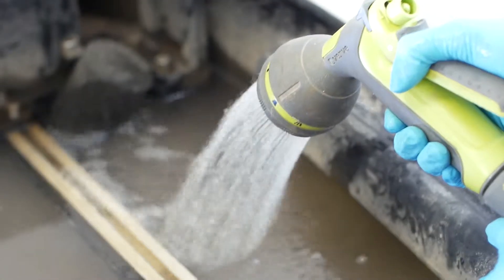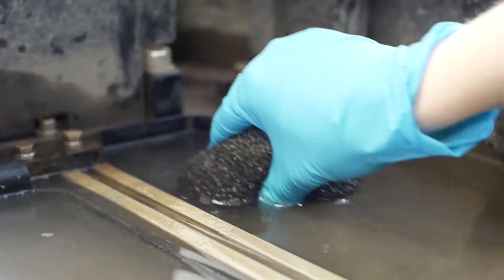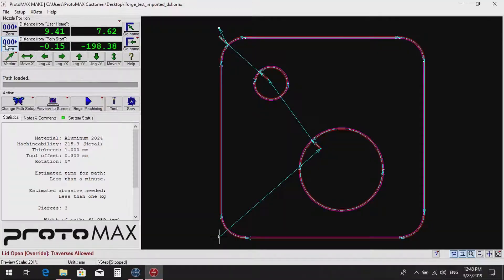Fill the tank to 5mm above the bottom of the nozzle using the provided hose. This improves cut quality and decreases noise levels. Make sure the drain is moved to the upwards position to stop the water from draining.